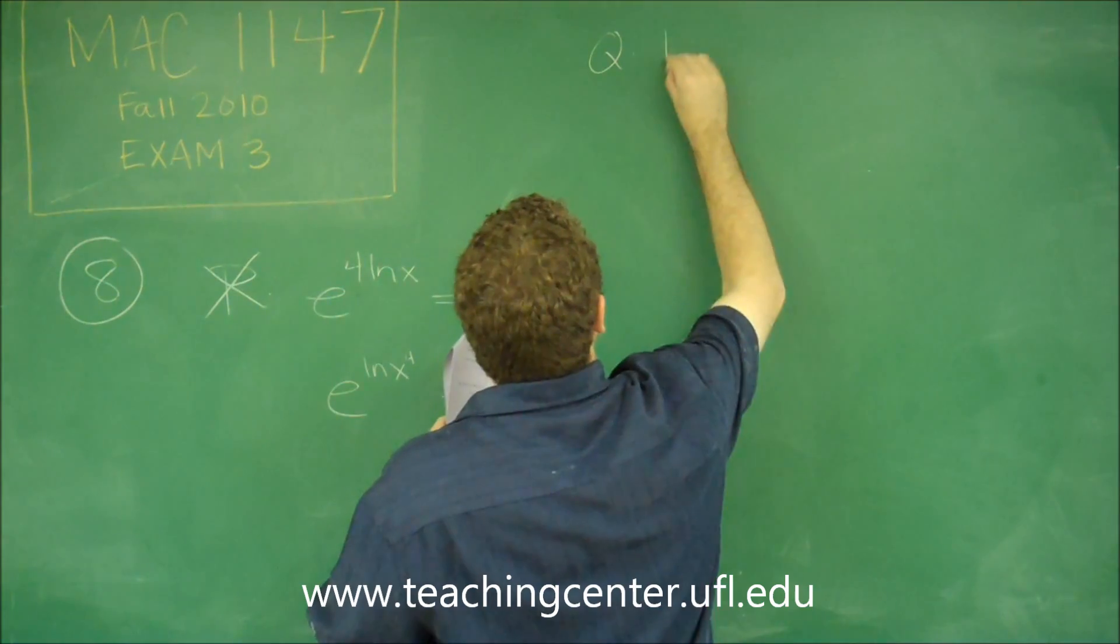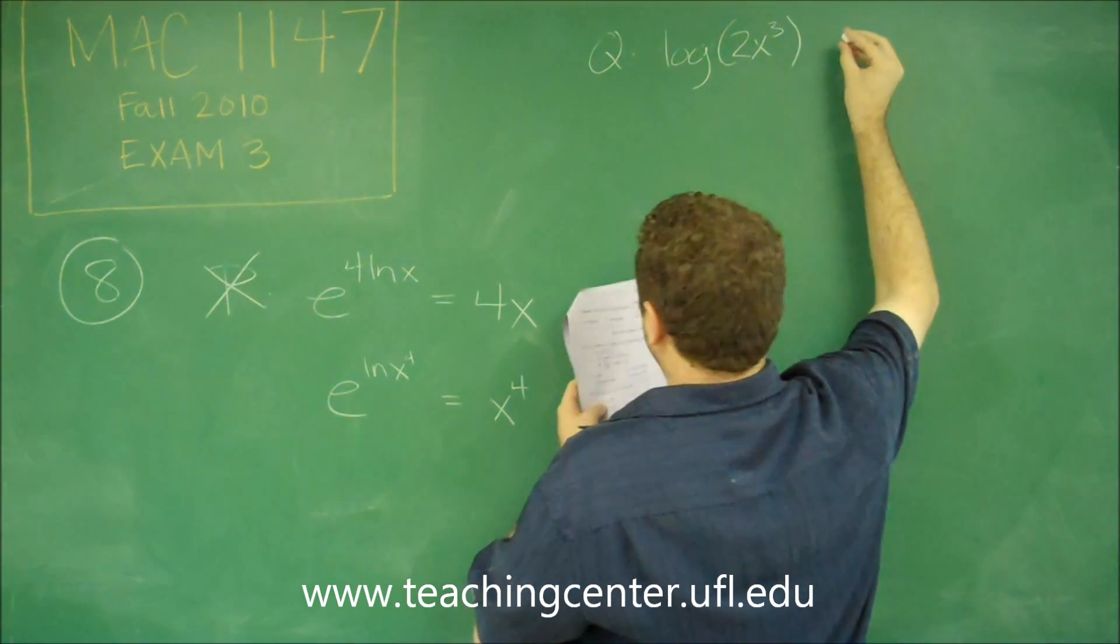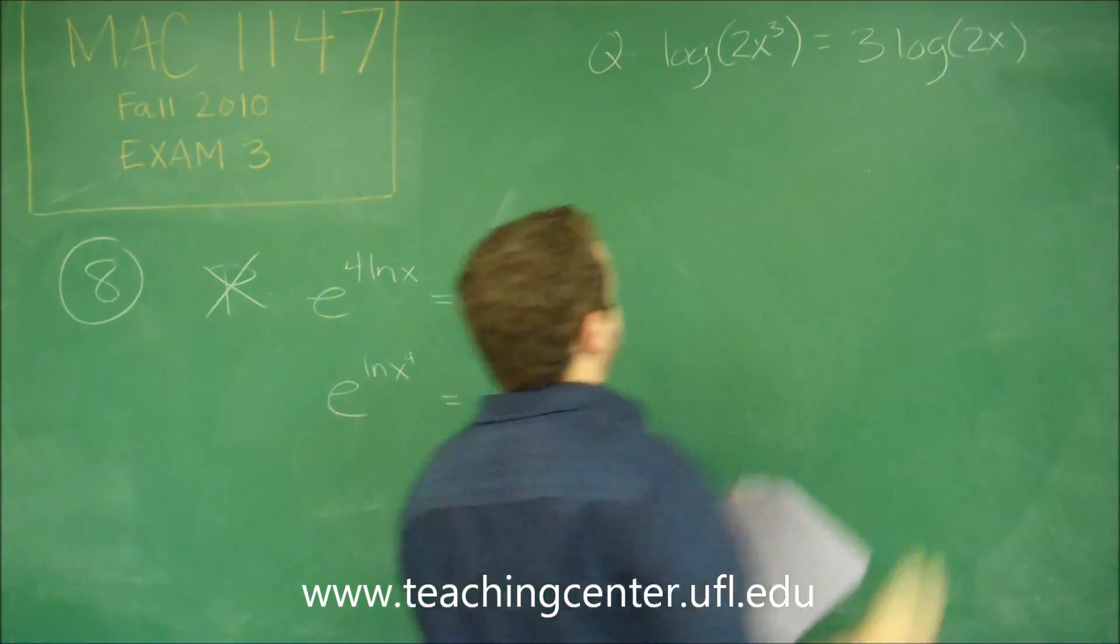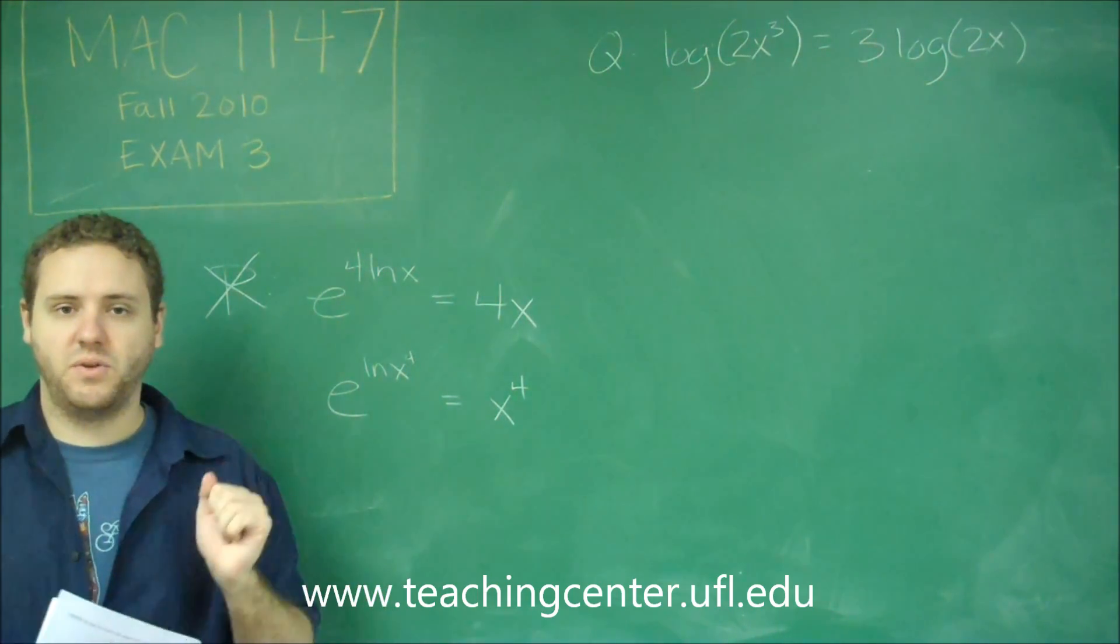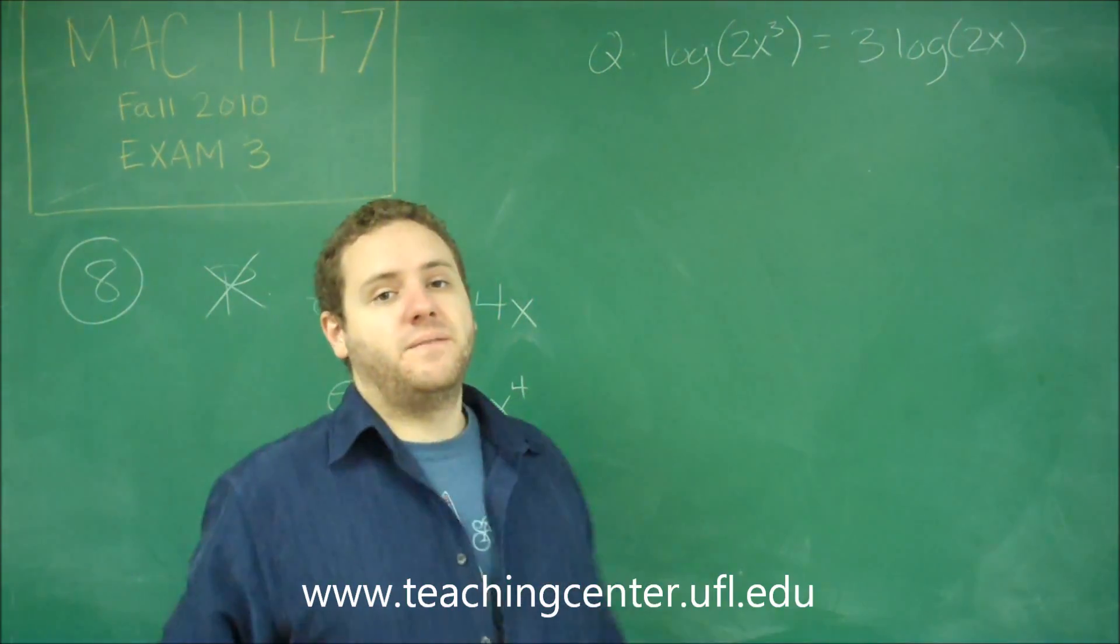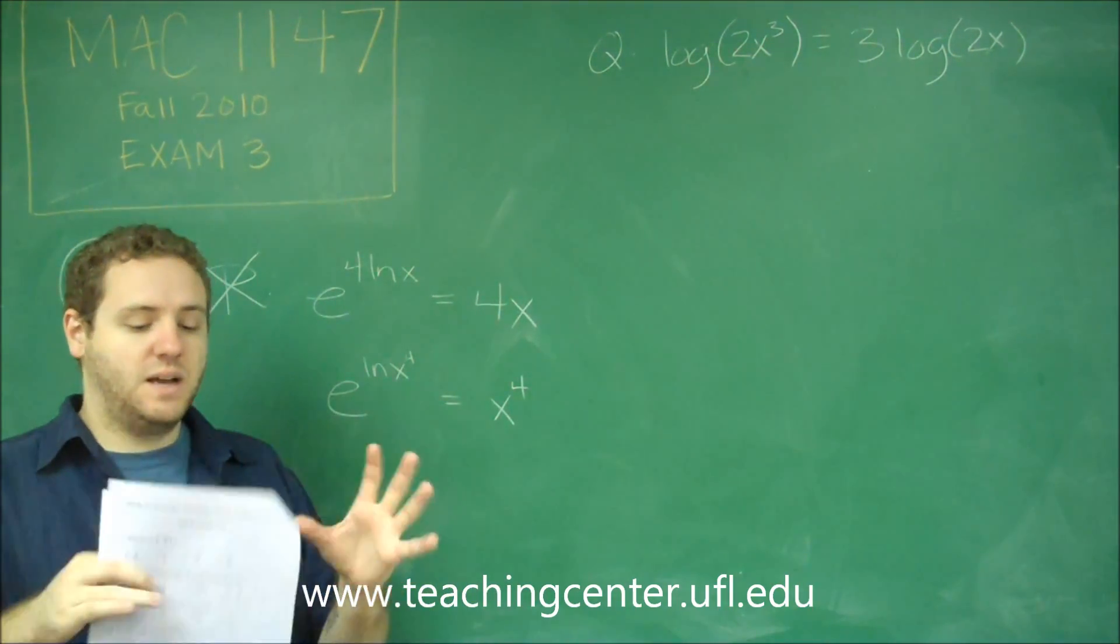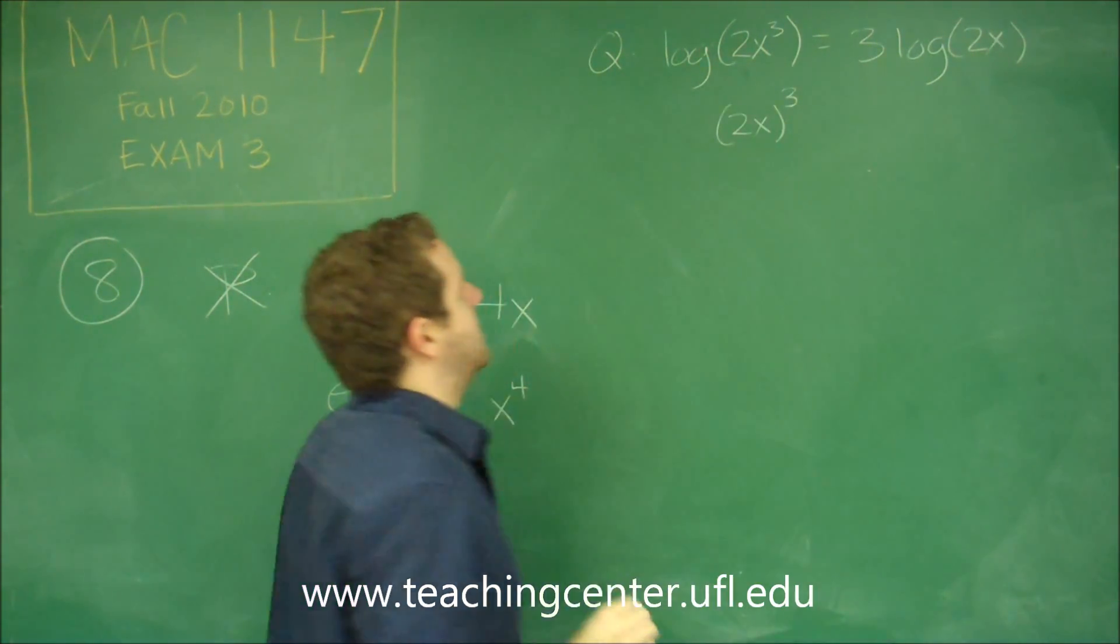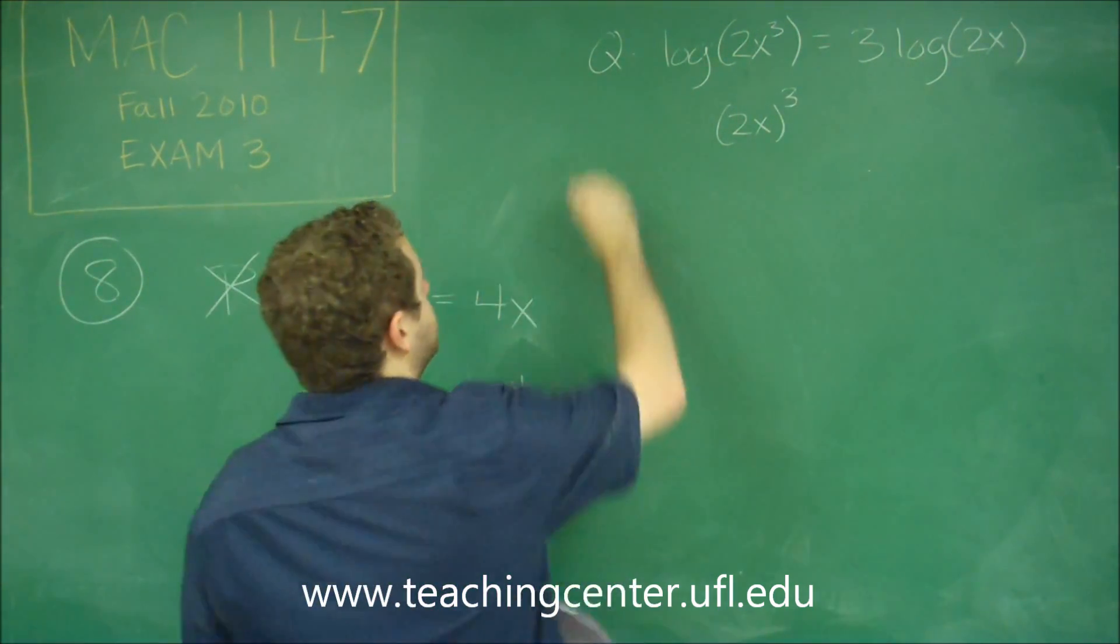So Q says log of 2X cubed is equal to 3 log of 2X. Okay, so this is trying to use the rule that we just did here in reverse. If you have a power, it goes in front of the LN or the log. Okay, the problem with this one is that you can only do that if everything was to the third power. 2X cubed, you can't move that cube there, because it's not 2X in parentheses cubed. If it was this, then yes, you definitely could move that 3 in front, and you'd have 3 log of 2X. That's not what we have here, so this is incorrect.